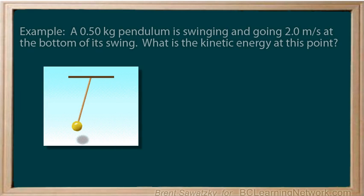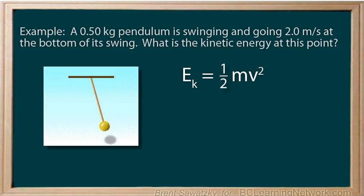Another example. A 0.5 kilogram pendulum is swinging and going 2 meters per second at the bottom of its swing. What is its kinetic energy at this point? First, we write down the equation we intend to use. EK equals one-half mv squared.